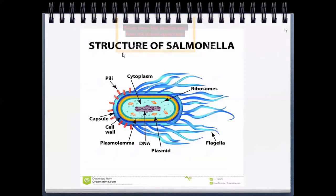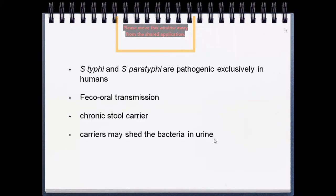Looking at the structure: there is a flagellum, then a capsule shown in light blue, then the dark blue cell wall, the plasma membrane, and DNA inside the cytoplasm. This is the overall bacterial structure of Salmonella typhi.